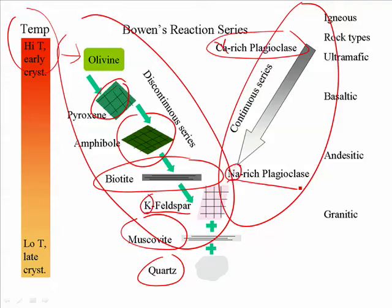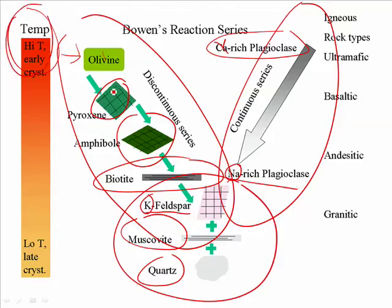And then, of course, the extra silica and the extra aluminum and such are all going into making the K-feldspar, muscovite, and quartz. So, you're starting high temperatures, olivine, pyroxene, amphibole, biotite.